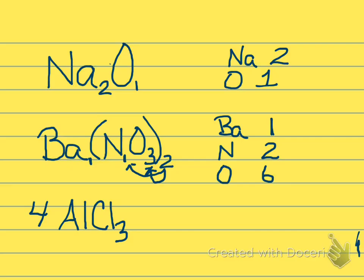This example, the next one, has both a coefficient and a subscript in it. The coefficient tells us we have 4 of this entire compound, so we have 4 AlCl3s. So what does that mean in terms of how many aluminums and how many chlorines do we have? This 4 multiplies by the aluminum, but there's only 1 aluminum, so 4 times 1, we have 4 aluminums. The subscript 3 tells us we have 3 chlorine atoms. 3 times 4, then, because we have 4 of everything, 4 times 3 means we have 12 total chlorine atoms.